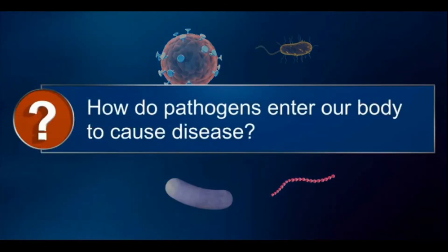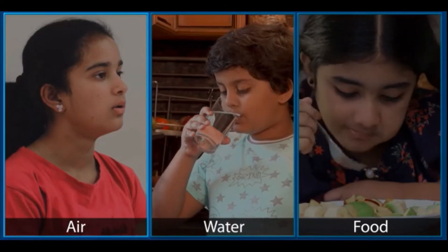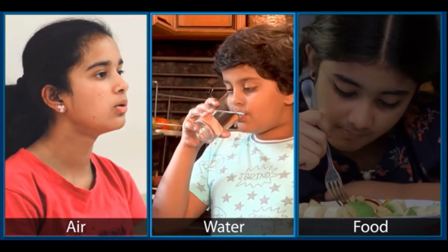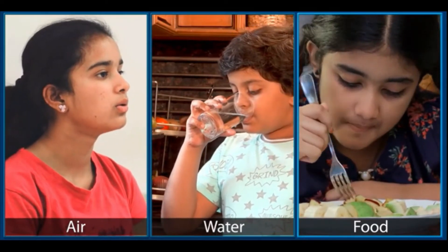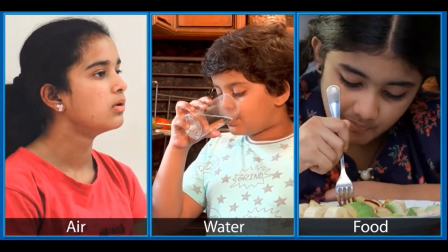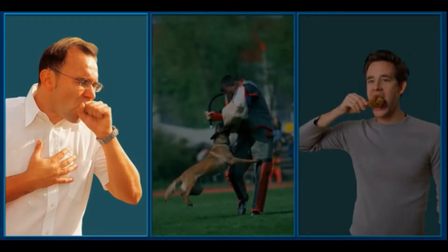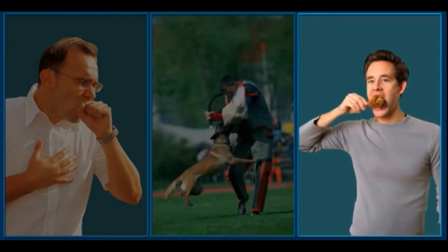How do pathogens enter our body to cause disease? Pathogens enter our body through the air we breathe, the water we drink, or the food we eat. They can also be transmitted by direct contact with an infected person or animal, or by eating meat prepared from an infected animal.